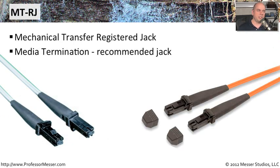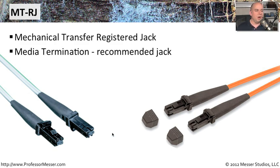One of the smallest fiber connection types is the MTRJ, which stands for Mechanical Transfer Registered Jack or Media Termination Recommended Jack. The goal was to make it about the same size as an RJ45 Ethernet connection, so fiber and copper ports would use the same amount of real estate on networking infrastructure. Inside the MTRJ connector, both transmit and receive fibers are combined within that single tiny jack, so you plug in one connection and both fiber strands come out of it.